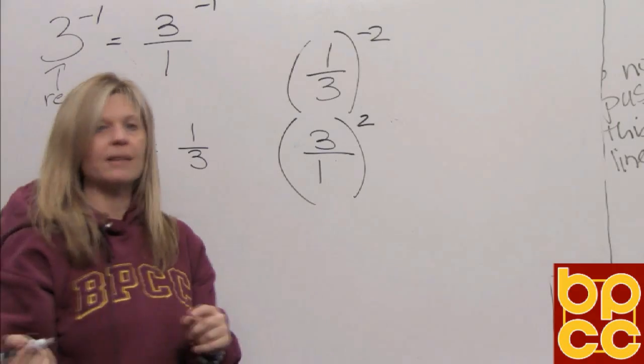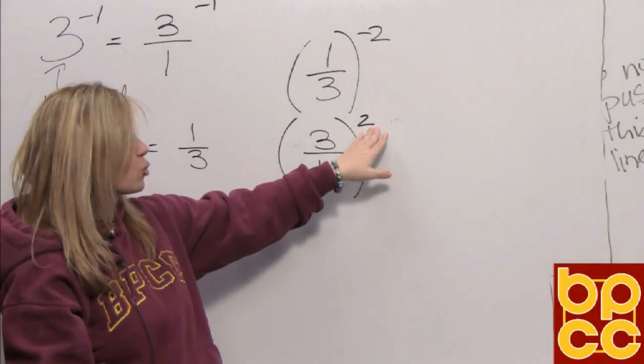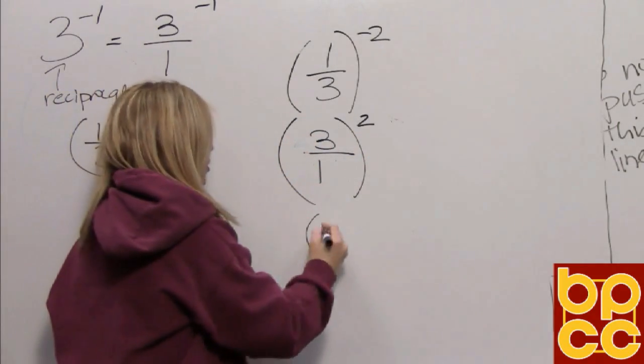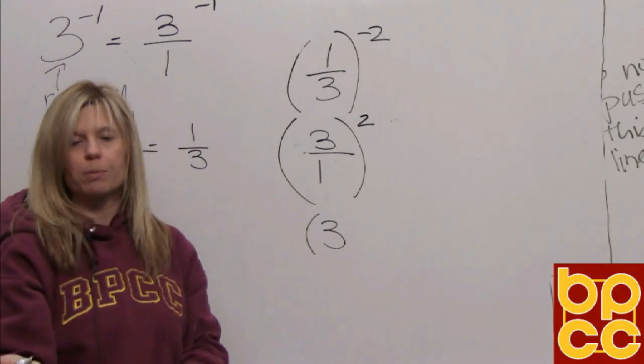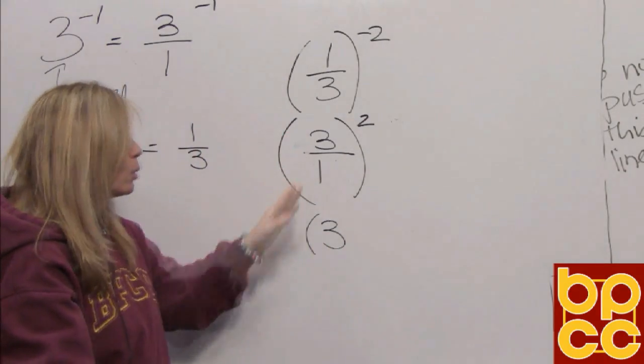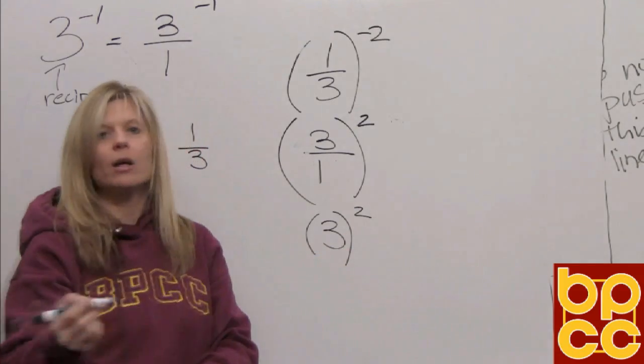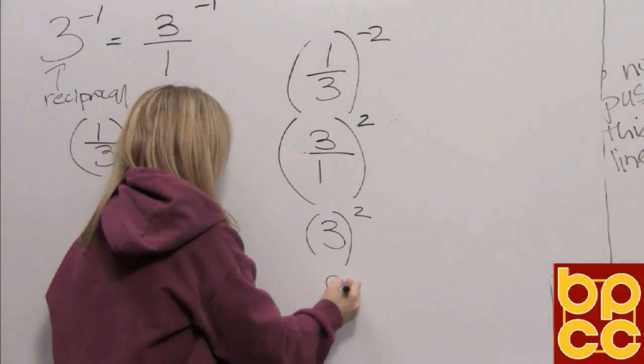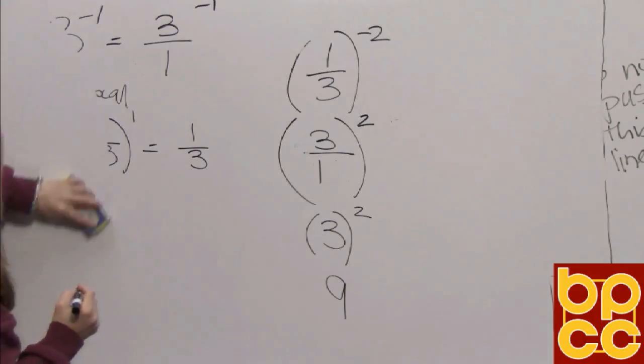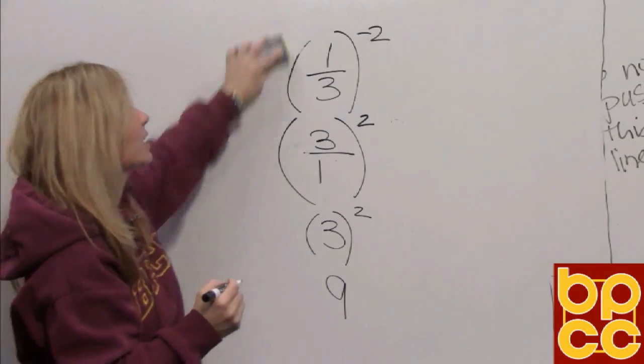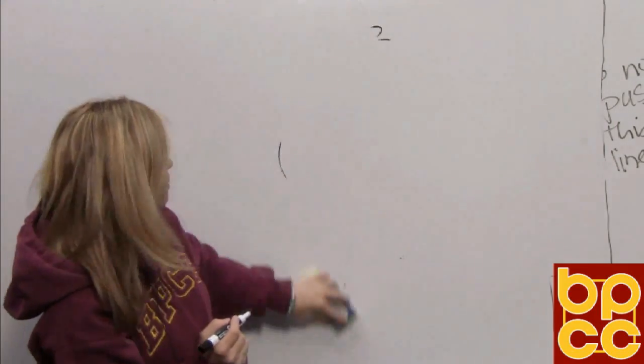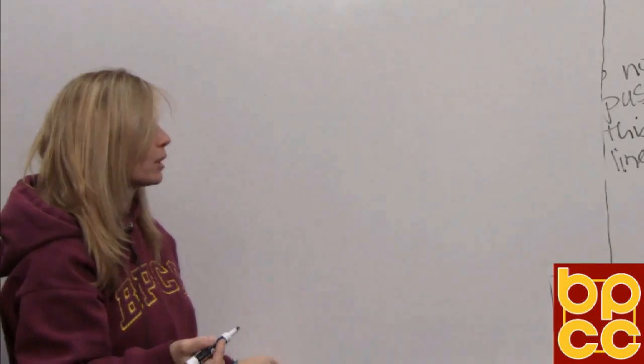And we understand that. Now before we write this twice we know 3 divided by 1 is 3. So following our rules, please excuse my dear Aunt Sally, we work the inside first. Now we'll do 3 squared. 3 times 3 is 9. So the moral of the story is you can never have a negative exponent. To make an exponent positive you do the reciprocal of the base.